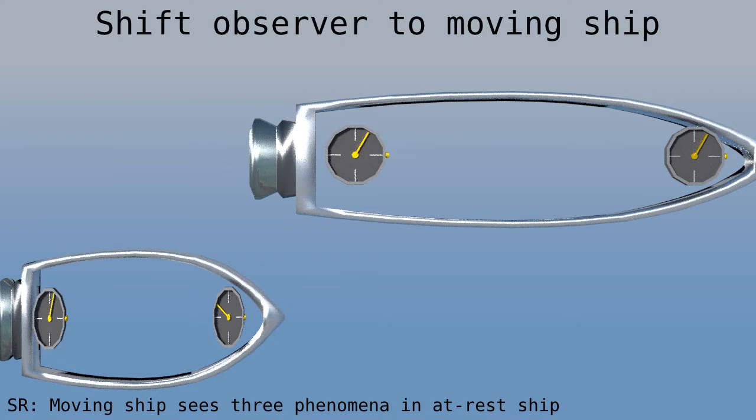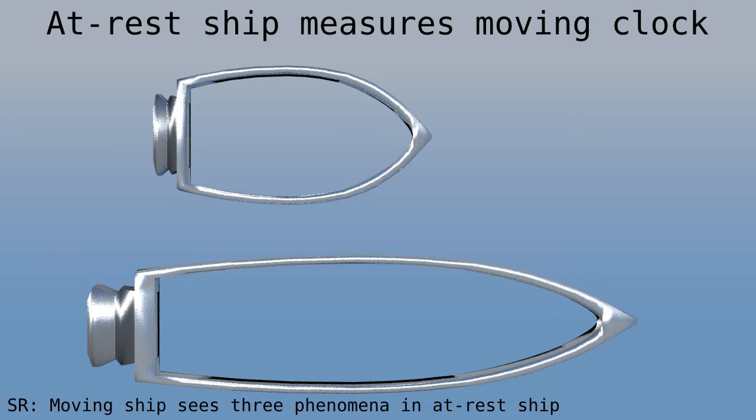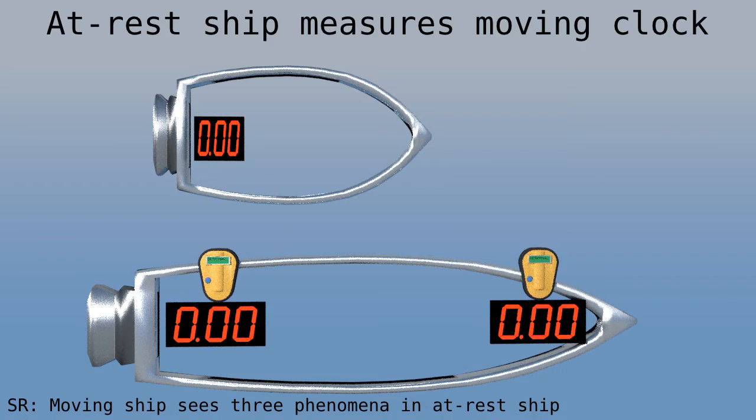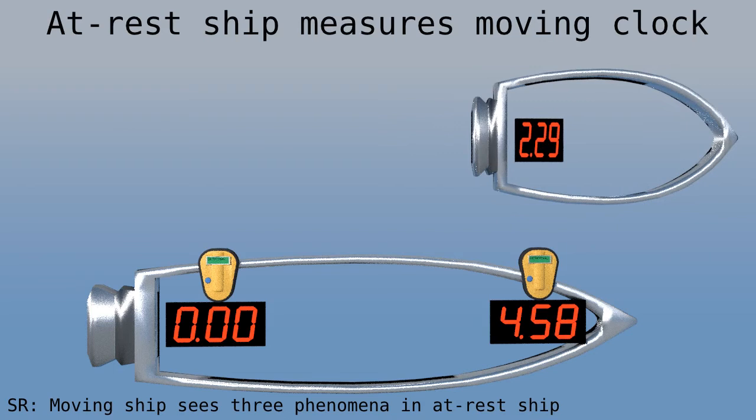Well, let's first look at how the ship at rest measures the ticking rate of the moving clock. The ship at rest is doing the measuring, so it needs two detectors at two locations. Let's look at the rear moving clock. When it passes the first detector, we see that it reads zero and our time is zero. When it passes the second detector, our clock there reads 4.58, but the moving clock reads only half as much. Simple!